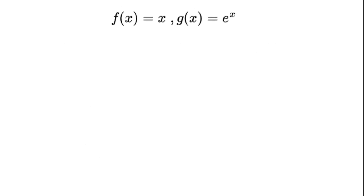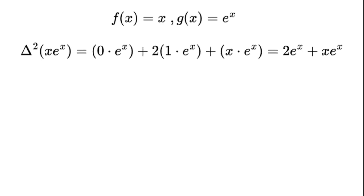Let's try f(x) equals x, g(x) equals e to the power of x. Delta to the power of 2 times (x times e to the power of x) equals 0 times e to the power of x plus 2 times 1 times e to the power of x plus x times e to the power of x, which equals 2 times e to the power of x plus x times e to the power of x.